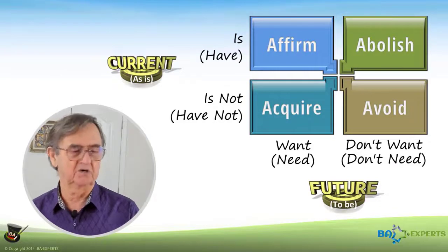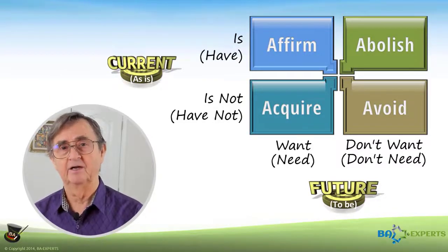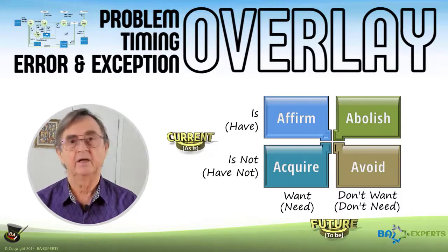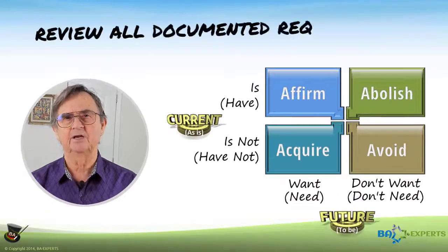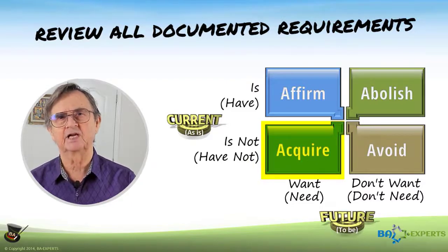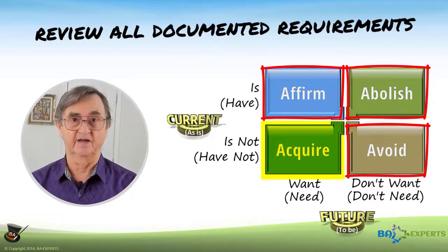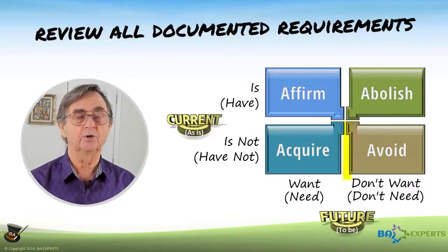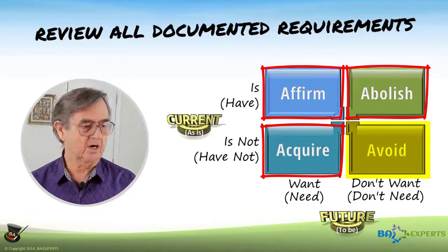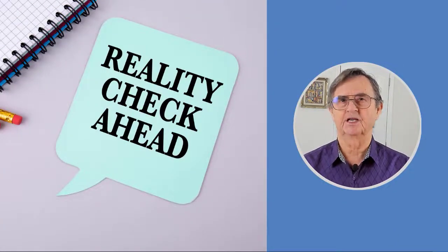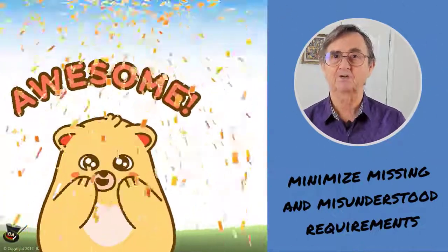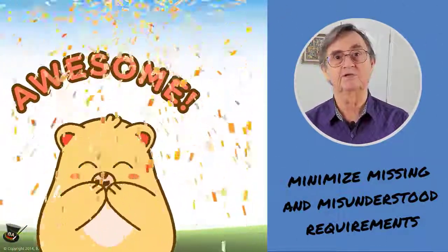Although this simple framework stands on its own and doesn't depend on a data flow diagram, the DFD overlay techniques presented earlier facilitate the discovery of requirements in all four categories. As a final check, I recommend reviewing all documented requirements. If you see a requirement that expresses something you want to acquire, check with the domain experts if there's anything else they want to affirm, abolish, or avoid while they are acquiring that. If you read a requirement defining what you want to avoid, is there anything they want to affirm, abolish, or acquire related to that requirement? This simple concept is really a reality check. If you internalize it as your way of thinking, it will help you minimize missing and misunderstood requirements, and that will drastically increase the odds that IT delivers a digital solution your business community needs and deserves.